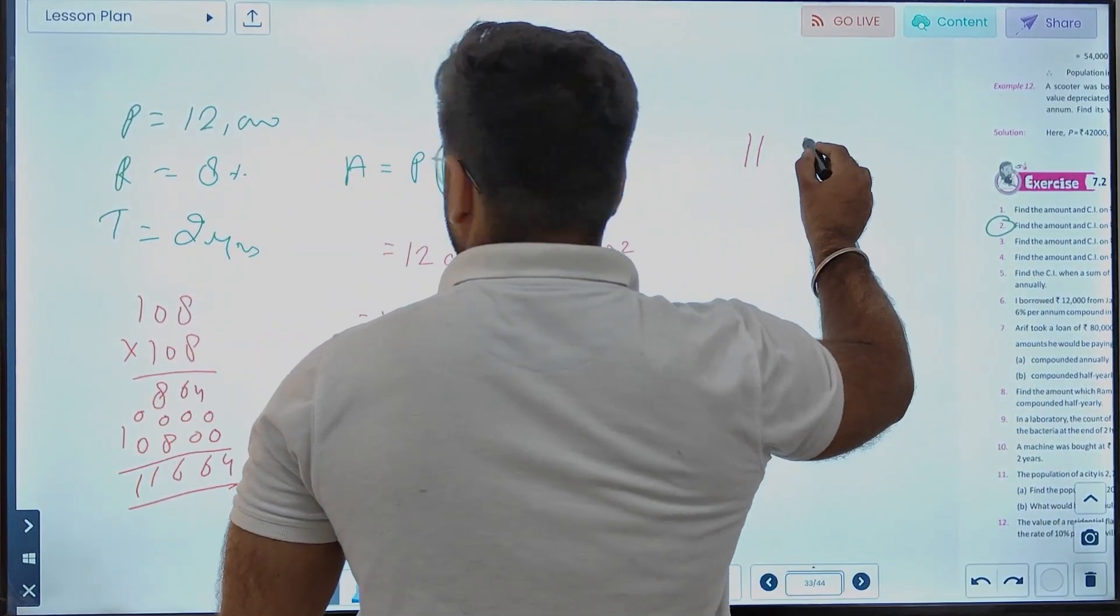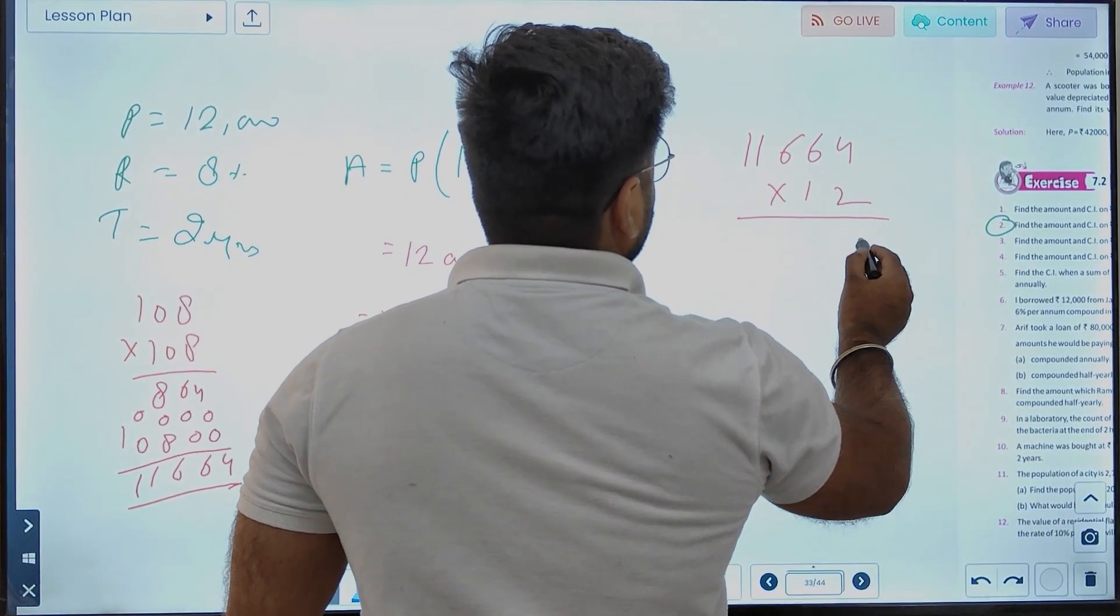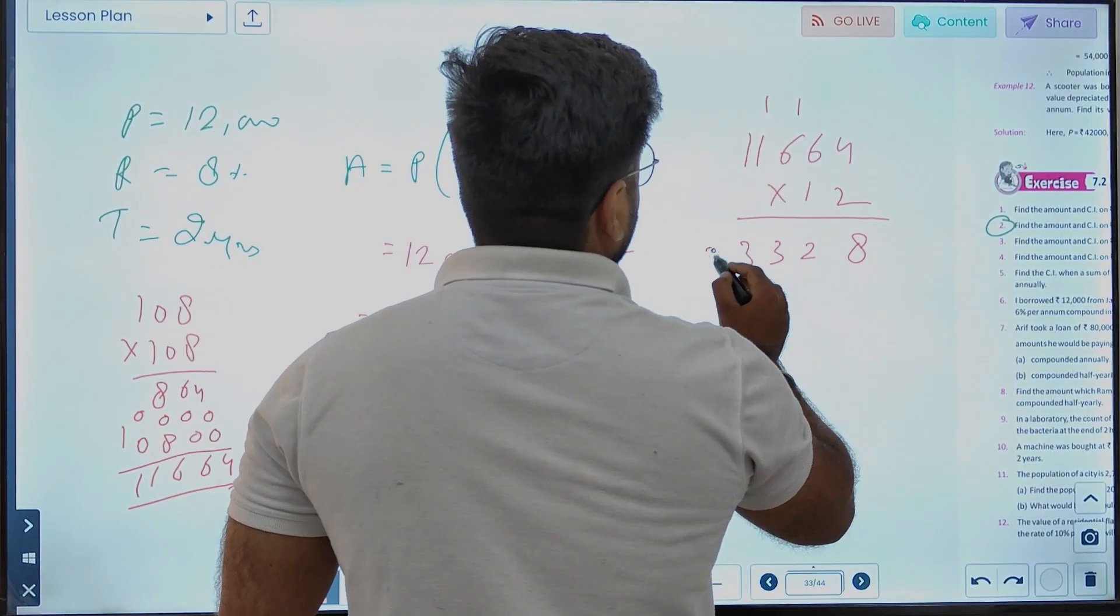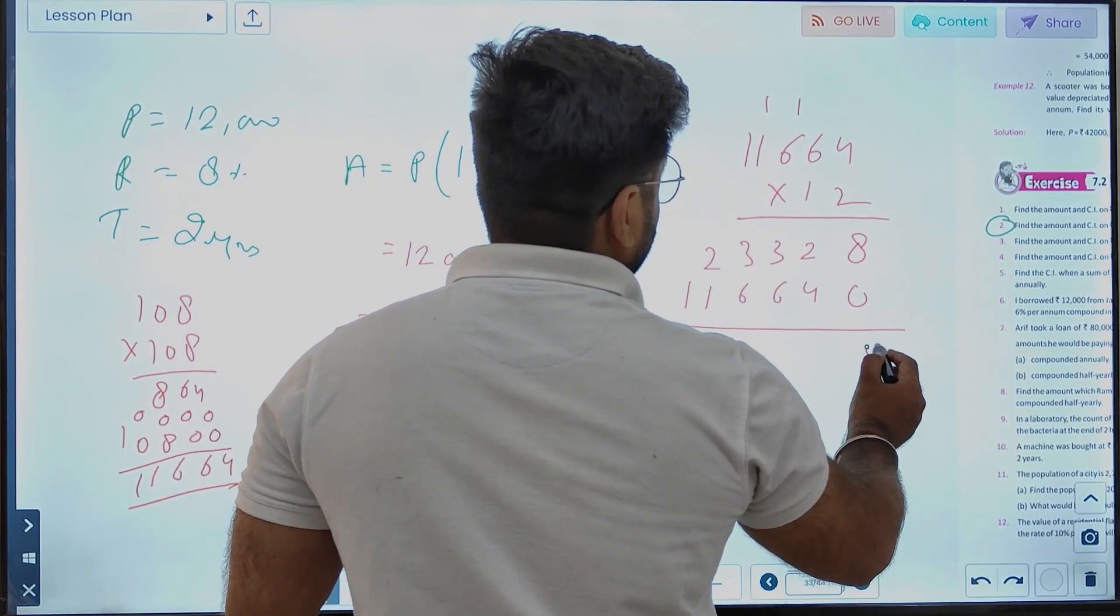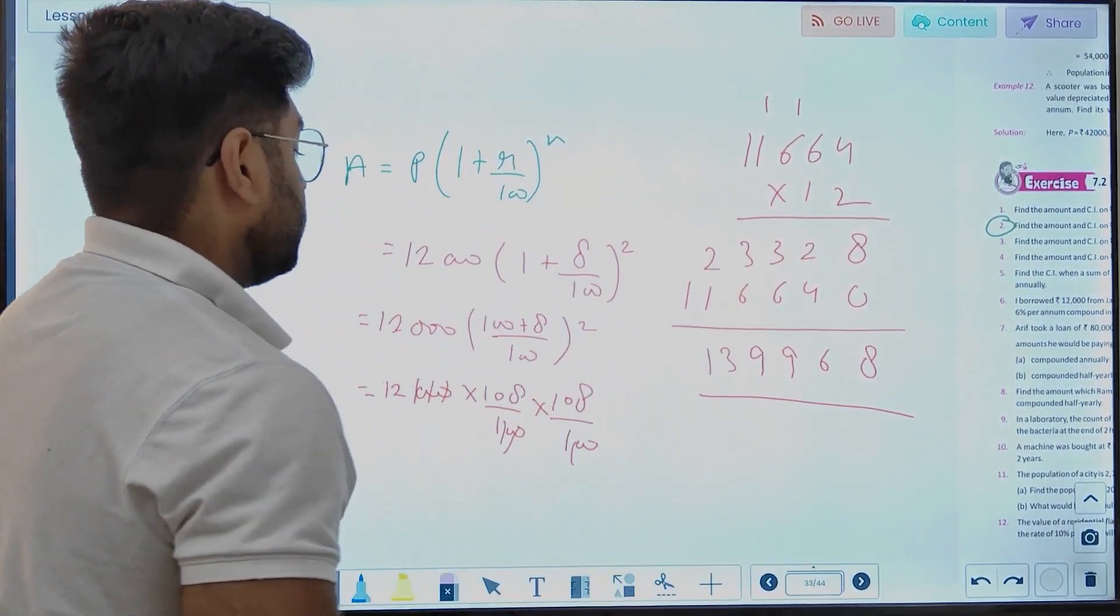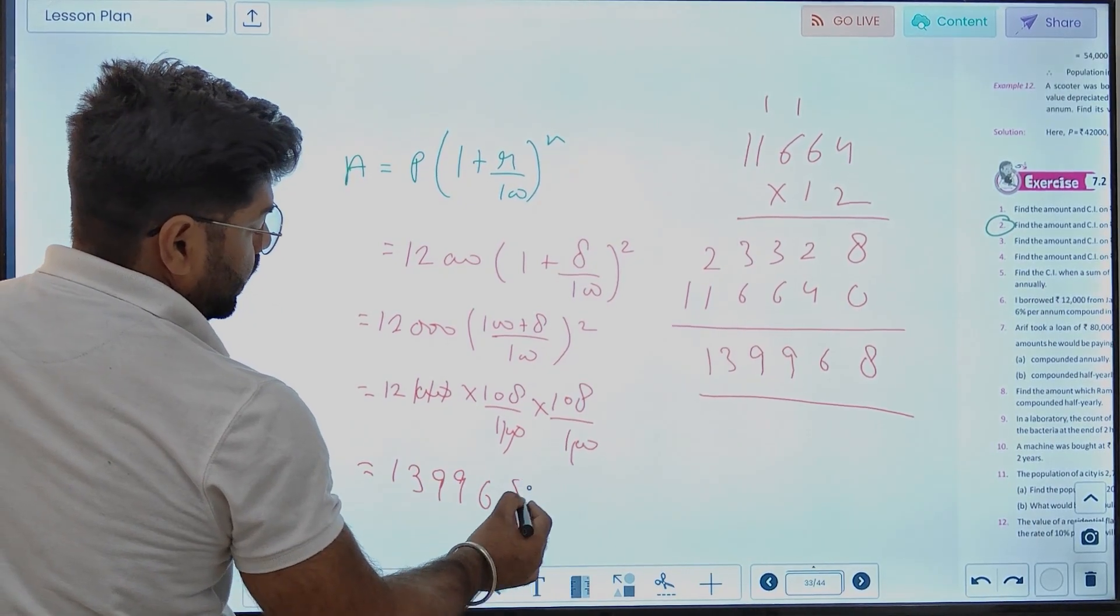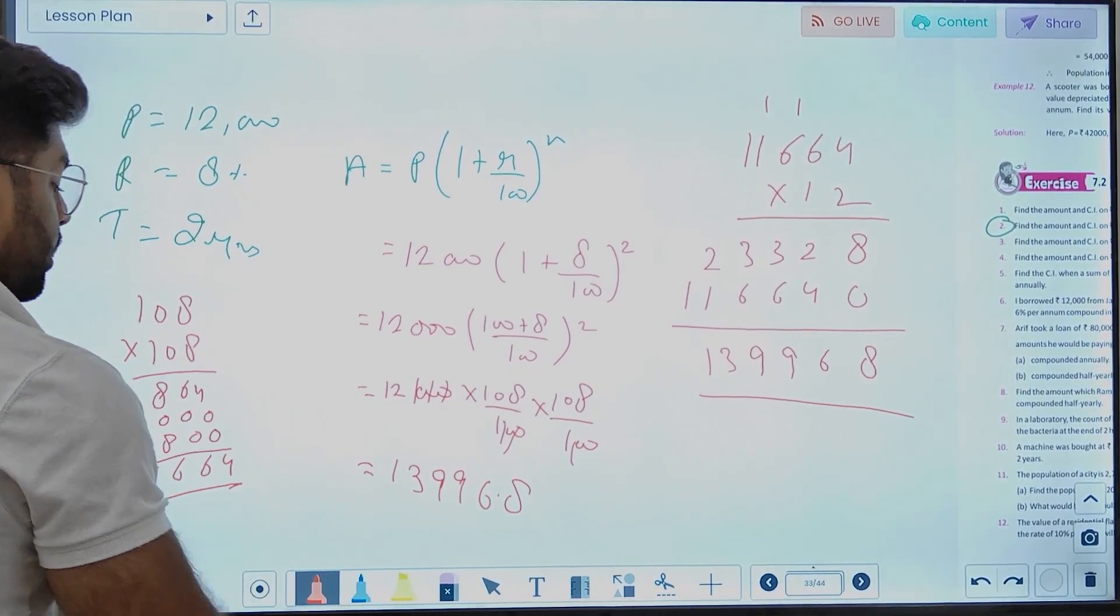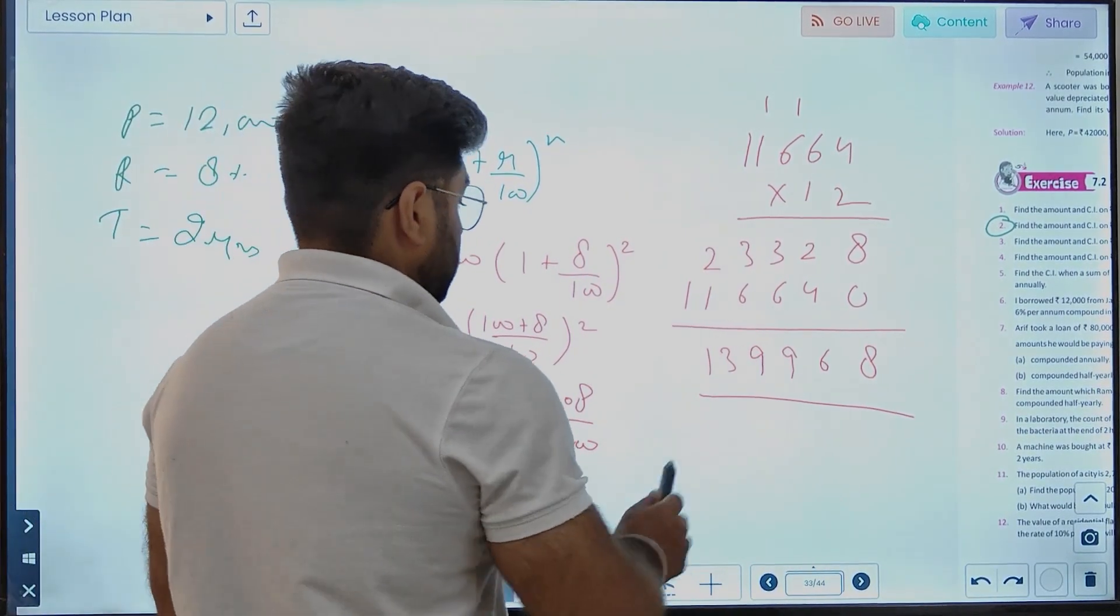So we get 11,664. Multiply that by 12: 8 times 12 is 96, carry 9, carry 1, and we get 139,968. Dividing by 10,000, we get amount equals 13,996.8 rupees.